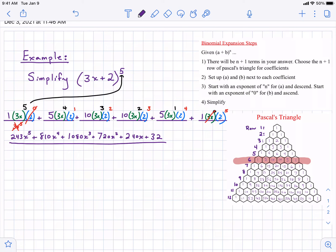For your exponents, count down for your first term starting with the same exponent. So we had to the fifth power, we start with the five. Count down for that first term. Count up for your second term. Check that they always add up to your original exponent. And then just take your time simplifying using a calculator as necessary.